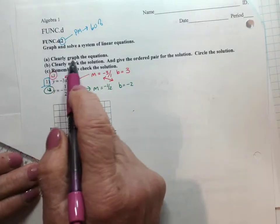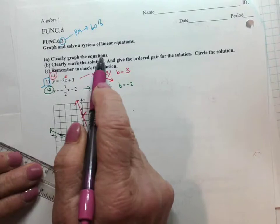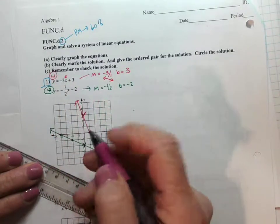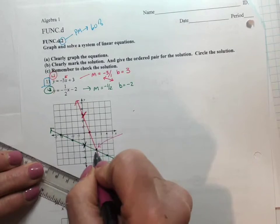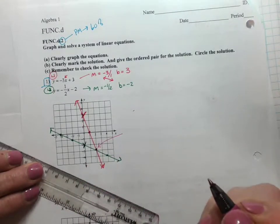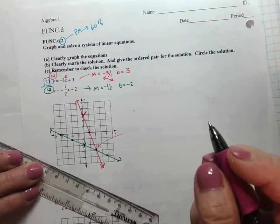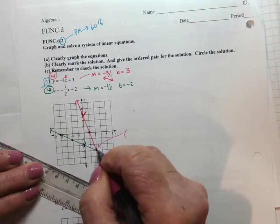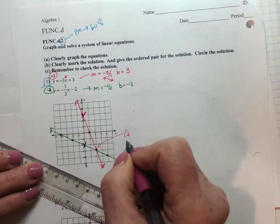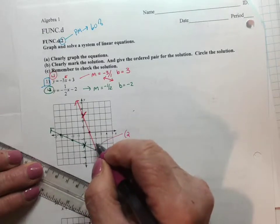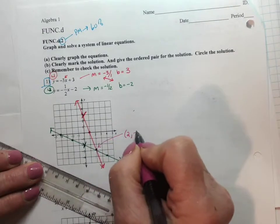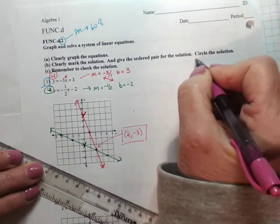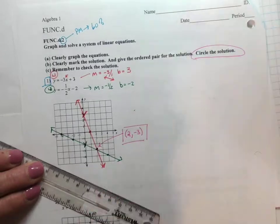So we've done A. Clearly graph the equations. Clearly mark the solution. The solution is where they meet. It's the point of intersection. And give the ordered pair. So the ordered pair is going to be 2, 1, 2, 3. Negative 3. Okay. And we circle the solution.